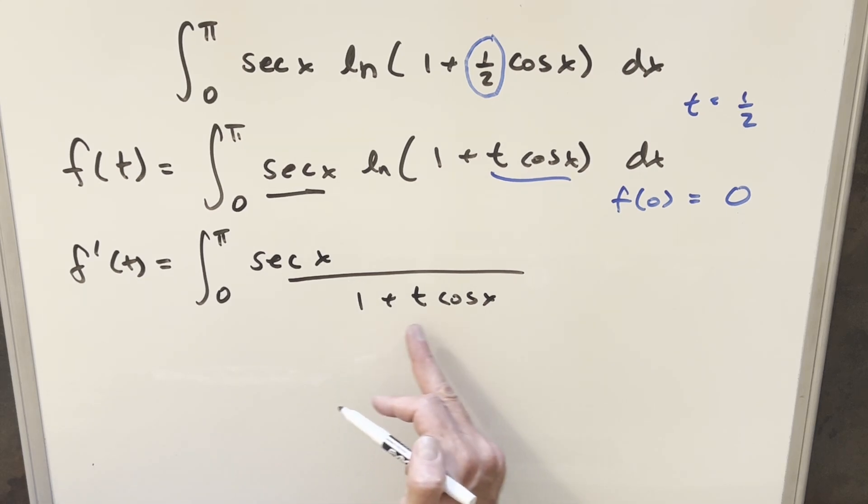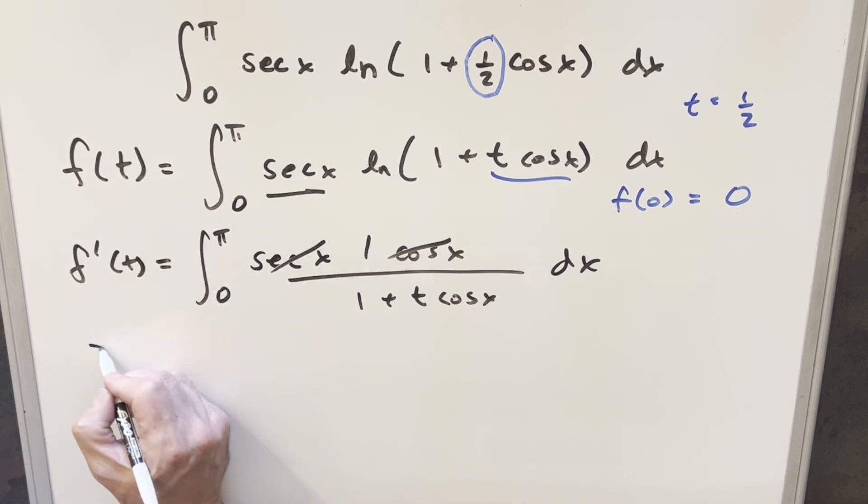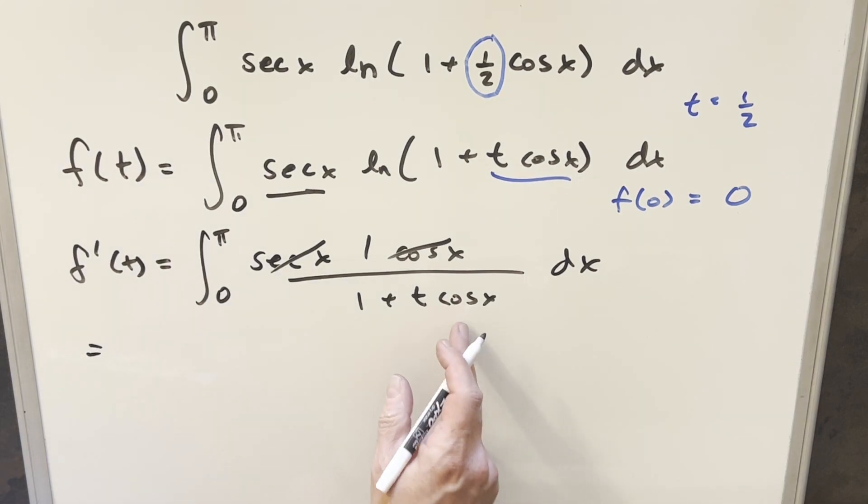Derivative of this with respect to t is going to be one over everything one plus t cosine x. Then chain rule, this is a zero. Derivative here with respect to t is just going to bring out a cosine x. But then cosine x times secant x, that's just going to be a one. And then at this point, this is where it gets messy because what I'm going to do on this, this isn't that easy.